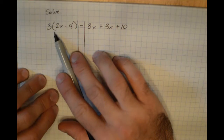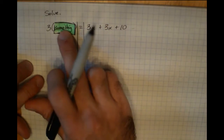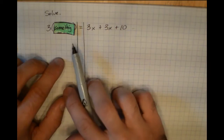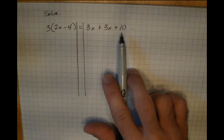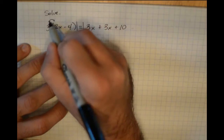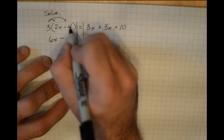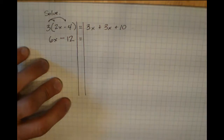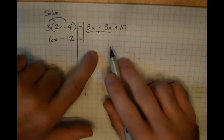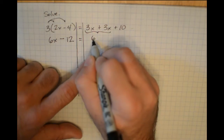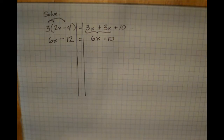On the left side, I'll distribute the 3. I could divide both sides by 3, but that 10 on the right is not divisible by 3 and would give me a fraction, so I'll just distribute. 3 times 2x is 6x, minus 3 times 4 is 12. On the right side, 3x and 3x are like terms on the same side, so I can combine them into 6x, plus 10.